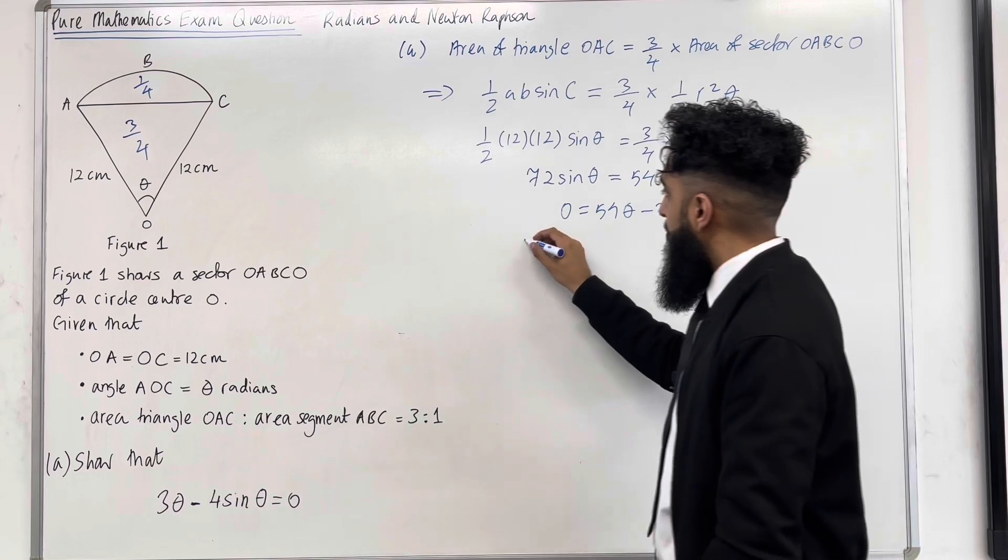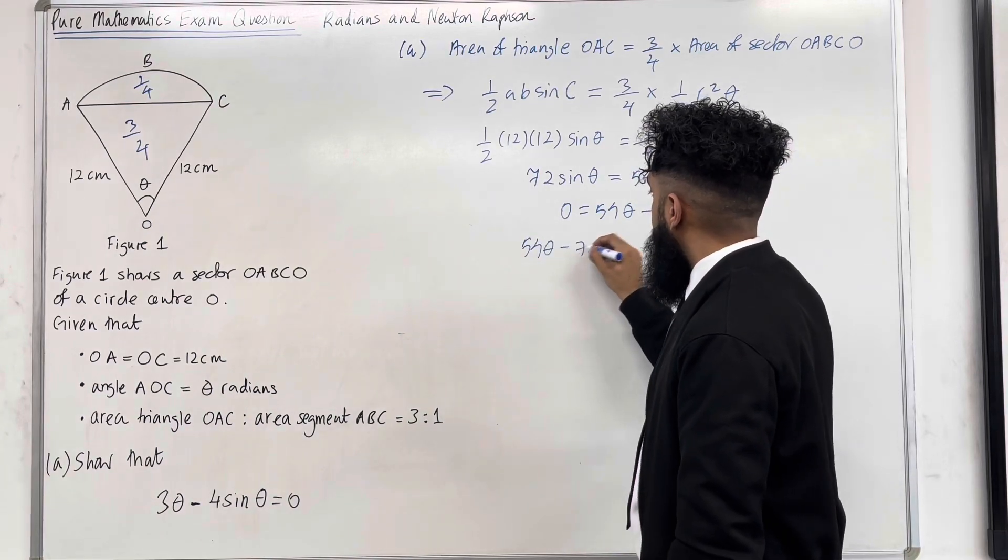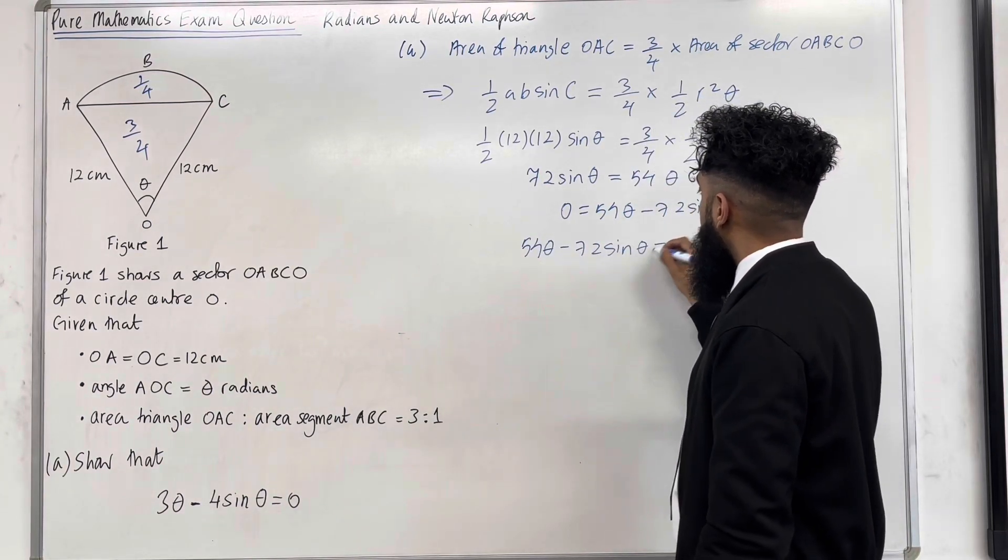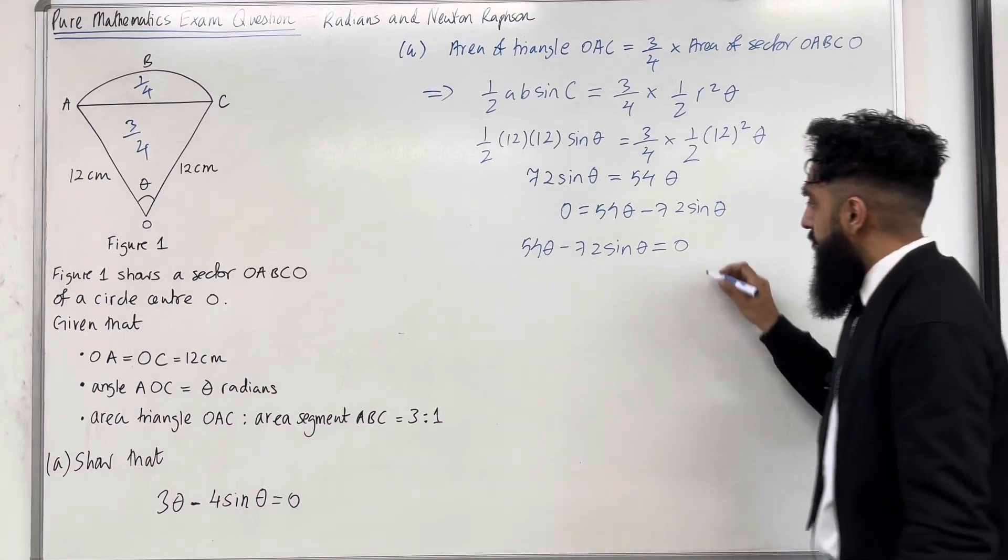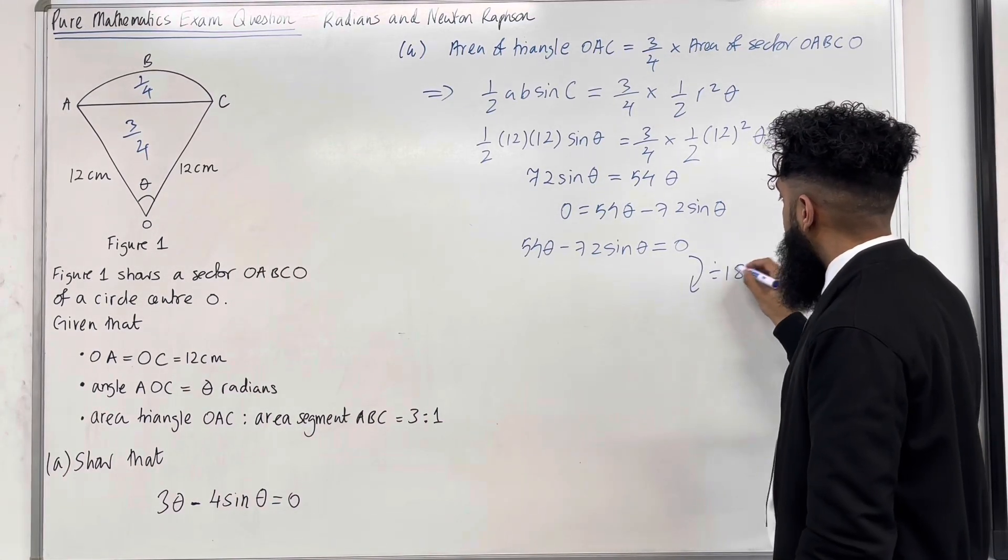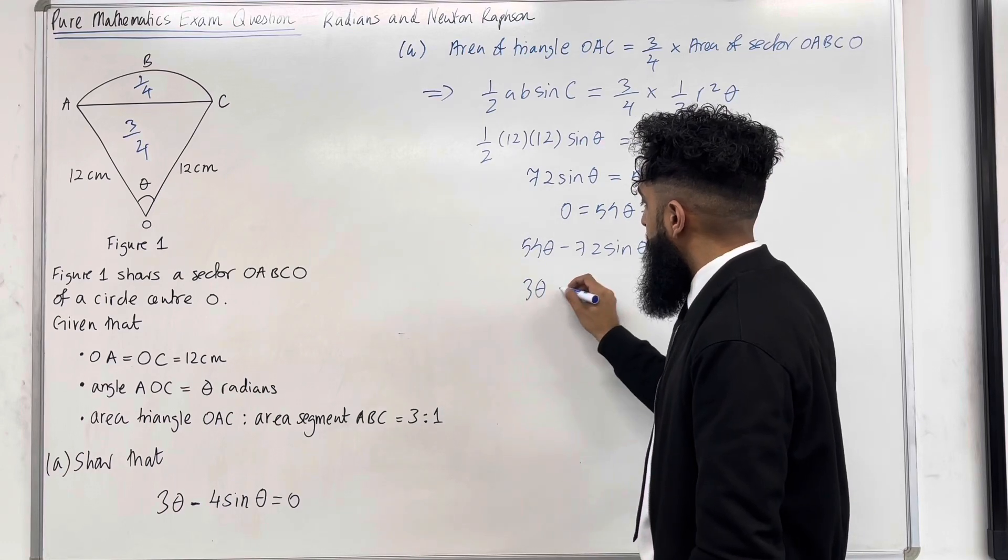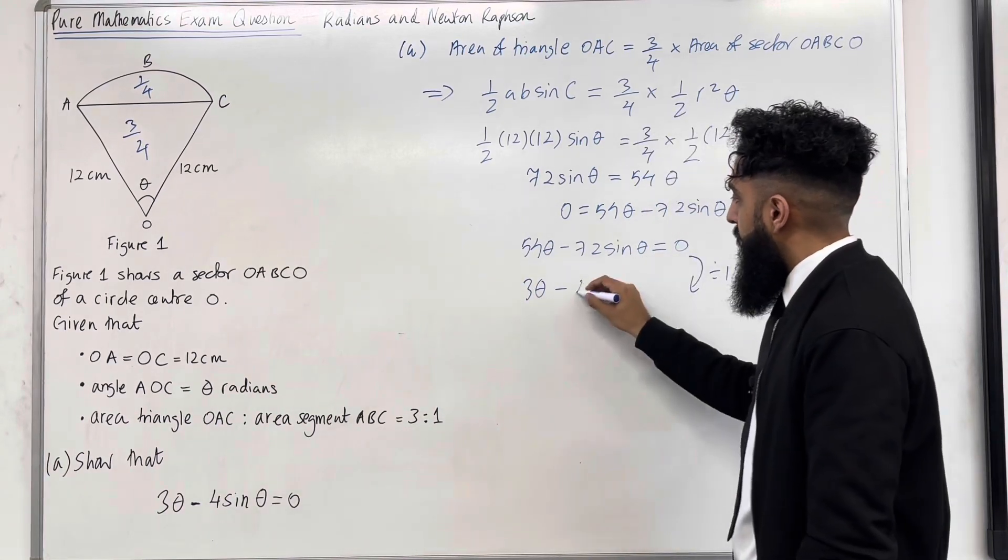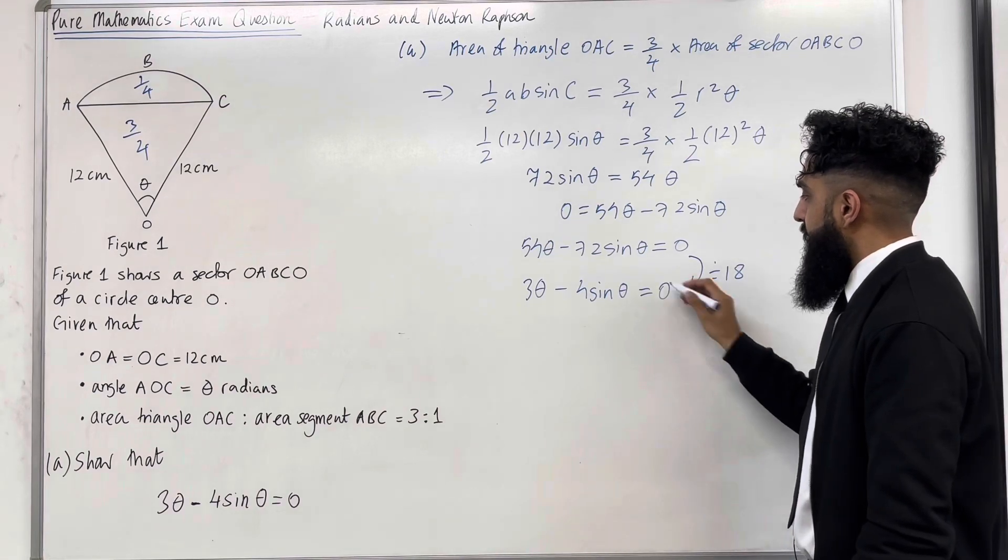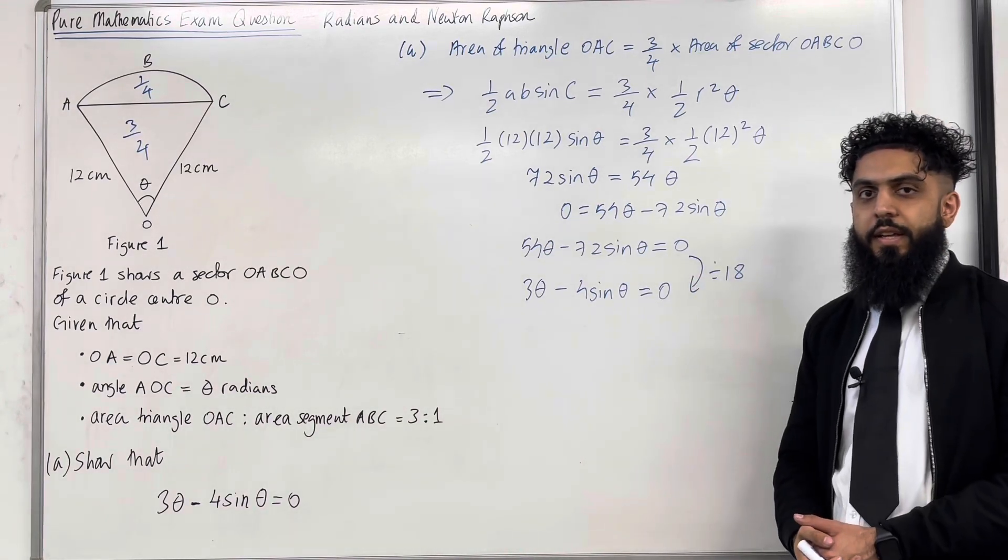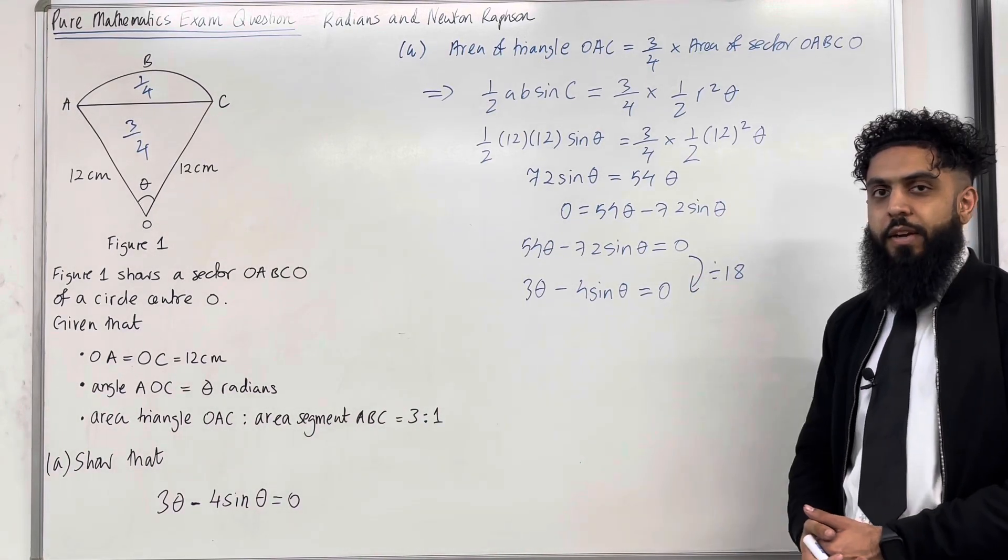Rewrite the equation as 54 theta minus 72 sine theta equals 0. Then divide the entire equation by 18. The first term becomes 3 theta minus the second term becomes 4 sine theta equals 0. That is the desired equation. This completes part A of the exam question.